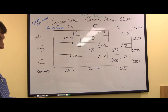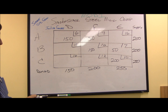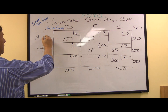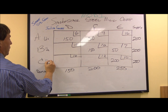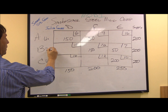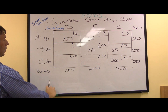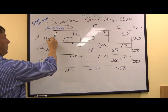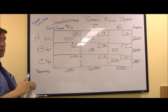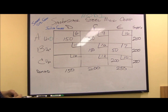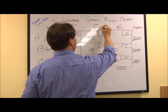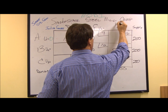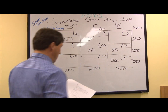Next, with the MODI method, it's a two-step process. First, we have to calculate the indices. So we use U. U1 is always equal to zero. So our index for U1 is always equal to zero. Then we have V1, V2, and V3 to determine.